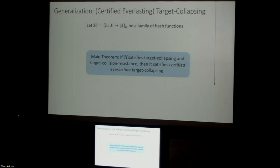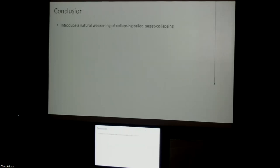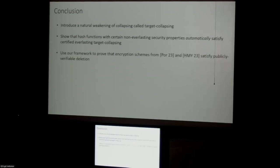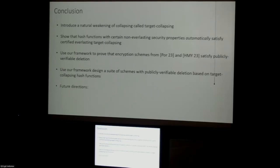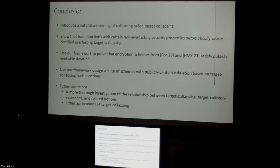Scoping back out: we introduce a natural weakening of collapsing that we call target collapsing. We show that hash functions with certain non-everlasting security properties like target collapsing automatically give us certified everlasting target collapsing. We use that to prove the security — specifically publicly verifiable deletion — of encryption schemes from prior work like Peremba's and HMY. We go beyond this to design a suite of schemes with publicly verifiable deletion based on these target collapsing hash functions. Future directions include further study of target collapsing and related notions, and understanding what other applications these weaker properties can enable beyond what requires full collapsing.